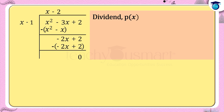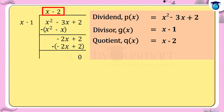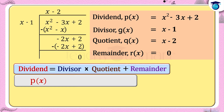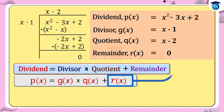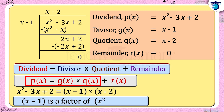Here we get: dividend p(x) = x² - 3x + 2, divisor g(x) = x - 1, quotient q(x) = x - 2, remainder r(x) = 0. Since the remainder r(x) = 0, p(x) = g(x) × q(x), that is x² - 3x + 2 = (x - 1)(x - 2). Therefore x - 1 is a factor of x² - 3x + 2.